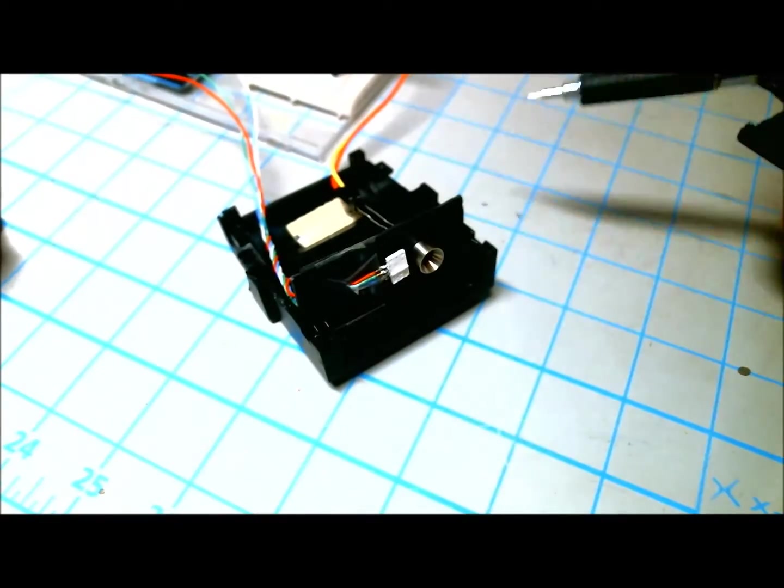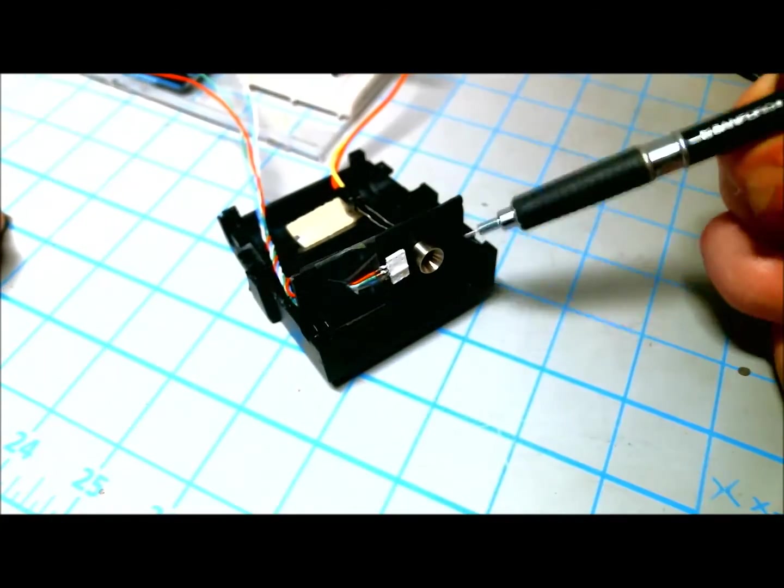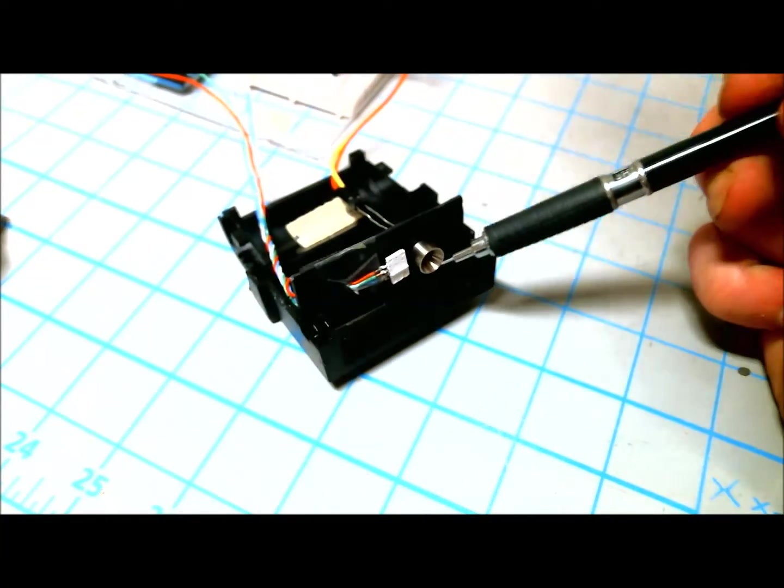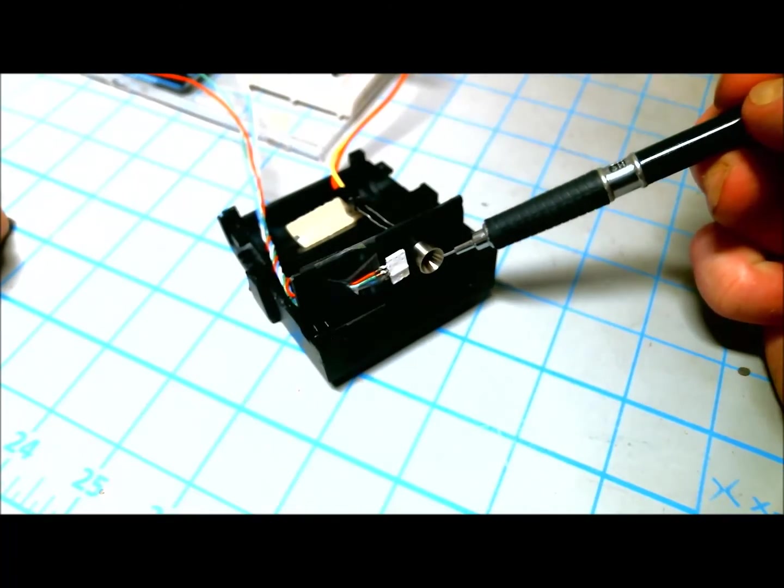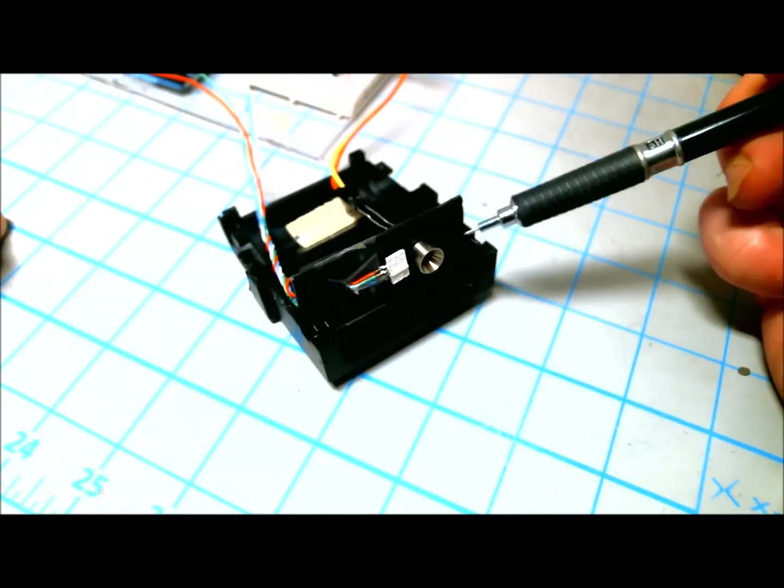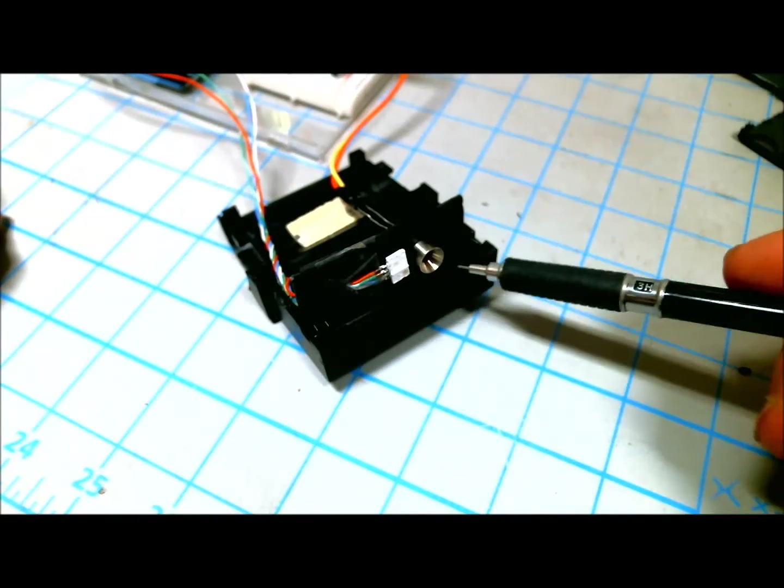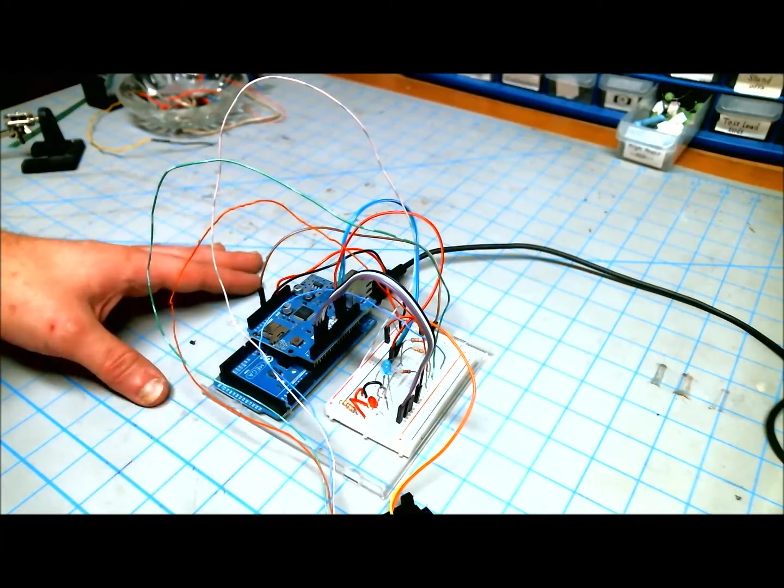One thing I failed to mention was what I used to hold the photoresistor. This is actually designed for a five millimeter LED. It's called a chrome finished LED holder. So if you typed it in on Google, you should be able to find this right away. Sparkfun has some. And as you probably noticed, I used an Arduino to program the color detector.